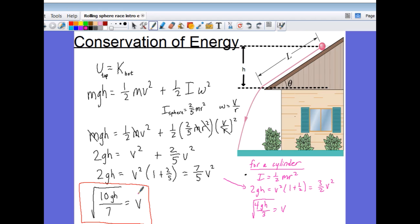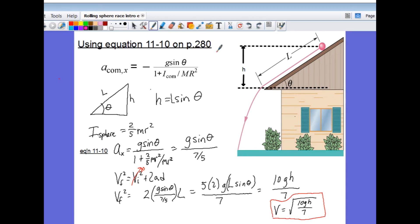What I found interesting was, if I use the equation 11-10 on page 280 of our textbook that shows the acceleration for a rolling object, I went ahead and took the moment of inertia of a sphere and plugged it into the equation and came up with the simplified version of the acceleration. And if I use equations of motion, because I know that the acceleration of the object is constant as it rolls down the slope,